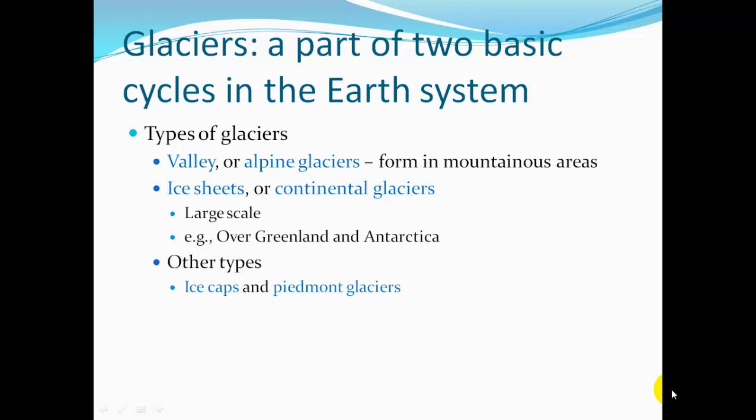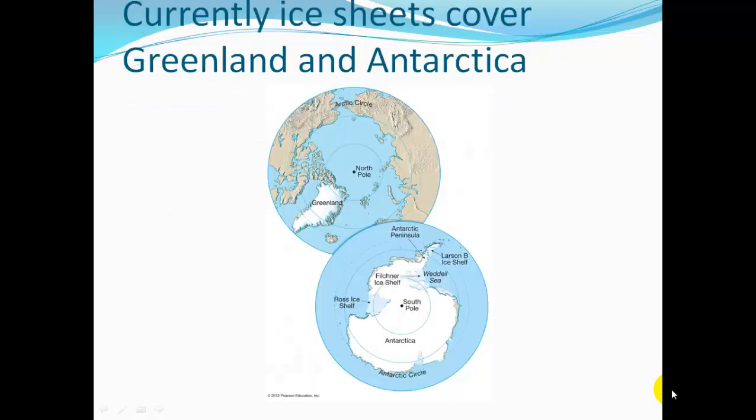Types of glaciers include valley or alpine glaciers, found in more mountainous areas. Ice sheets or continental glaciers are very large scale, covering areas such as Greenland or Antarctica. Other types of glaciers include ice caps and Piedmont glaciers.